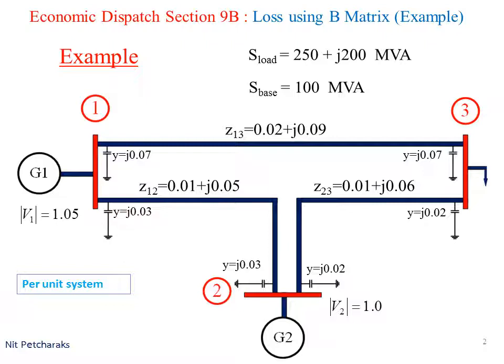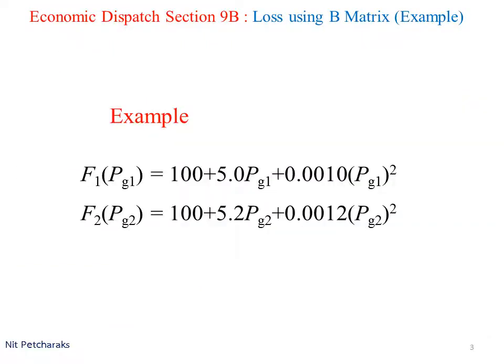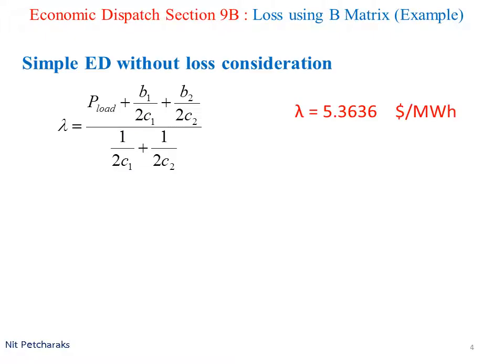Line impedances are given. Cost functions are given. G1 is cheaper. First, perform simple economic dispatch without loss consideration.